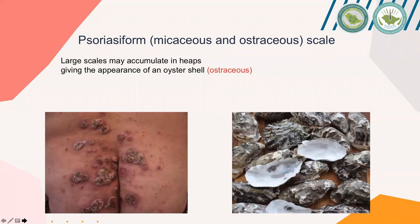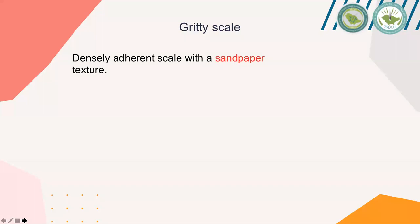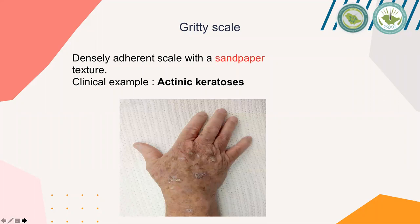Gritty scale means sandpaper-like texture. This kind of scale is densely adherent to the skin and when you palpate it, you feel a sandpaper-like texture. A clinical example is actinic keratosis, a pre-cancerous skin lesion usually present over the photo-distributed sun-exposed areas like the head, neck, and hands.